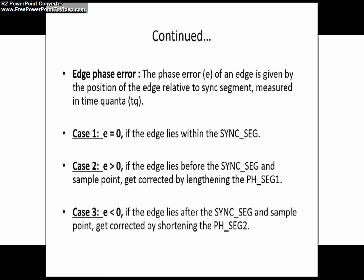Friends, let's understand when edge phase error will occur in a CAN network. I have already explained the same, but we will understand now with simple cases: case 1, case 2, and case 3 to make it very clear.